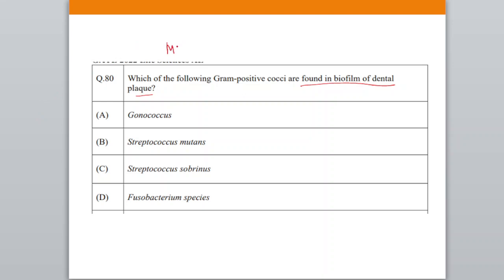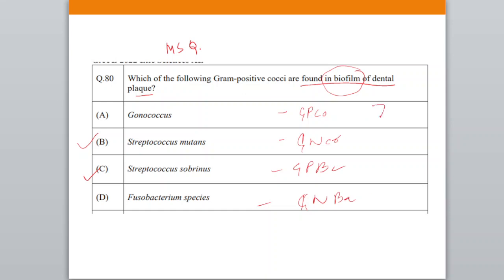It was an MSQ-type question — correct answers are B and C. This year a question came: which of the following groups of microorganisms form biofilm on dental plaque — gram-positive cocci, gram-negative cocci, gram-positive bacilli, or gram-negative bacilli? From the previous question we know that dental plaque biofilm is formed by gram-positive cocci, so that is the correct option.